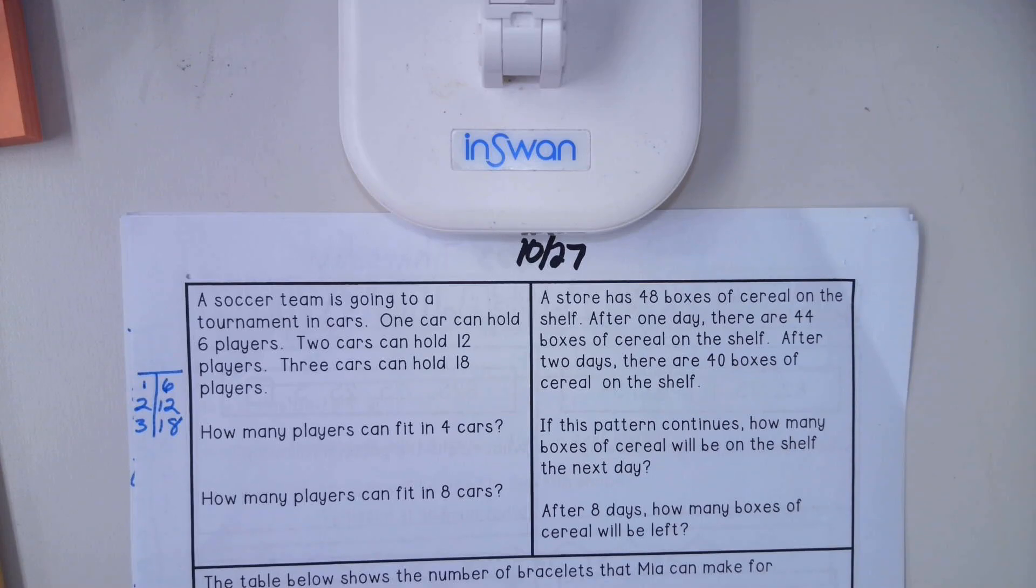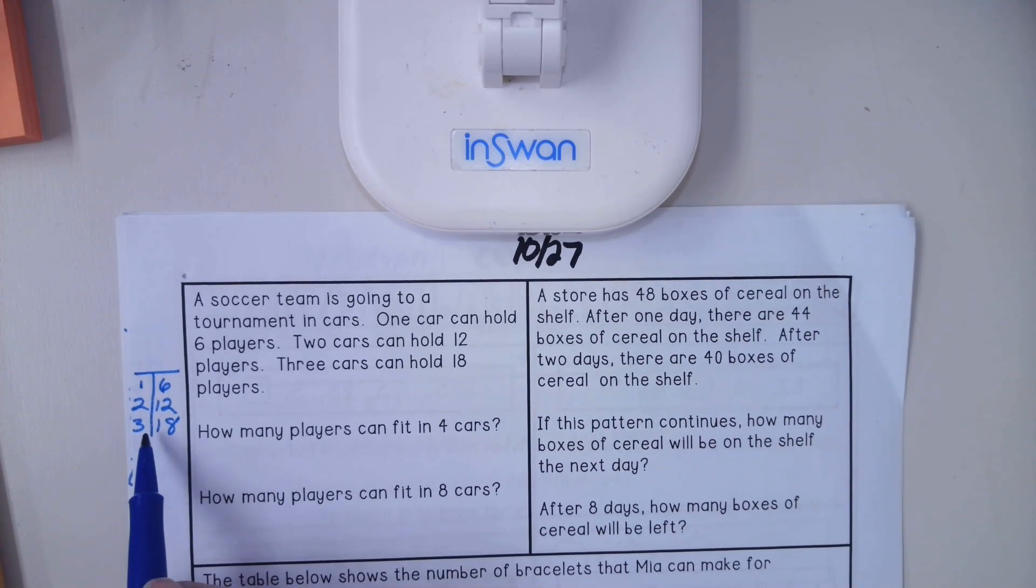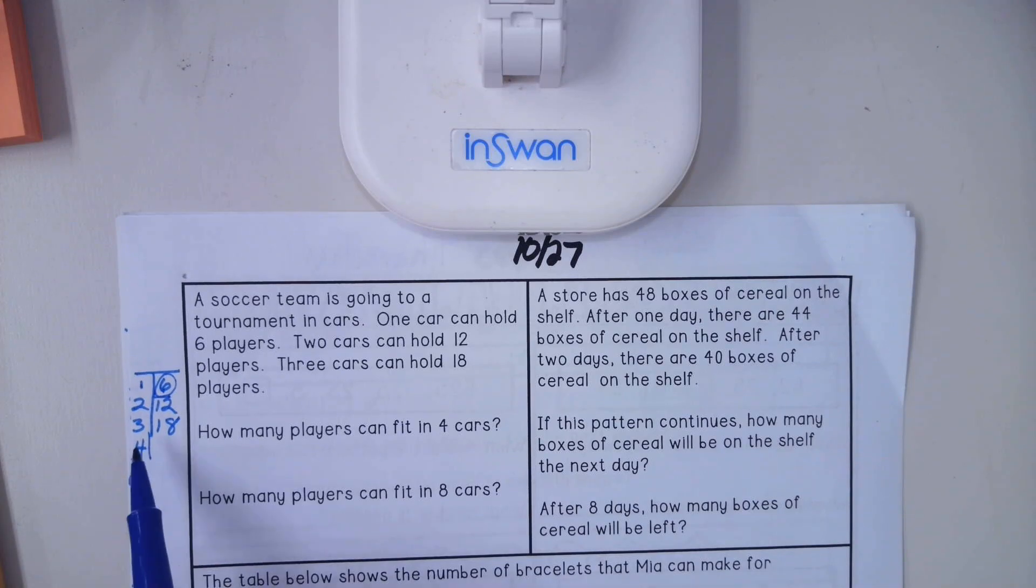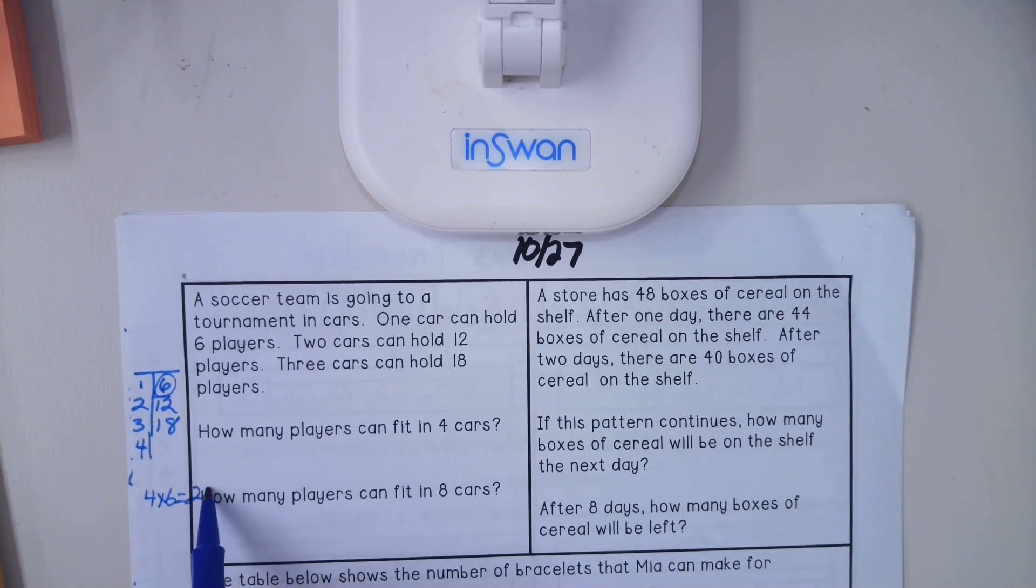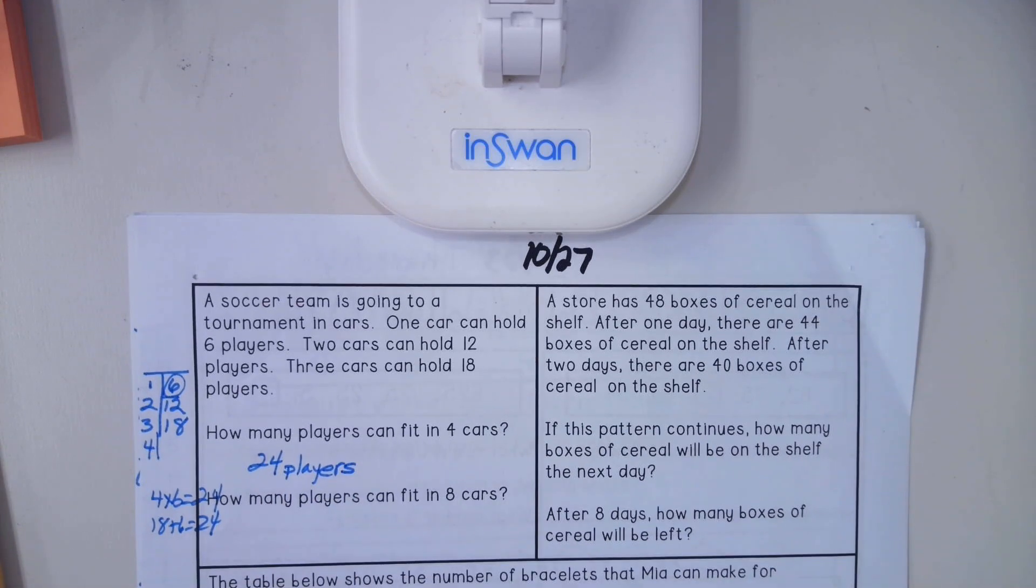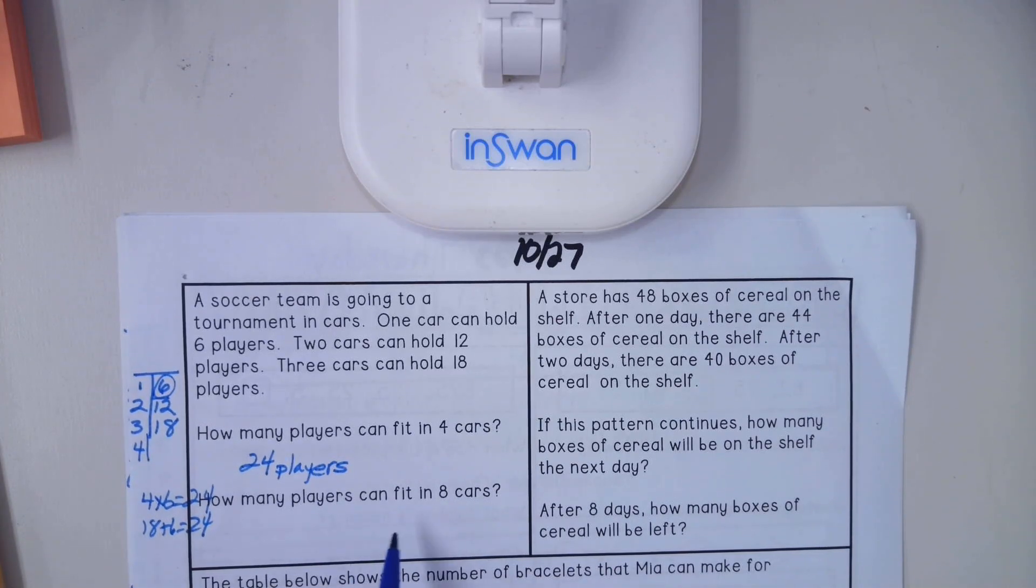How many players can fit in four cars? What will the next number in this pattern be? There are two ways to figure this out. You can say here's how much one car holds is six, so you could say four times six equals 24, or you can say 18 plus six equals 24. So our answer is 24 players. Make sure you label your answer.